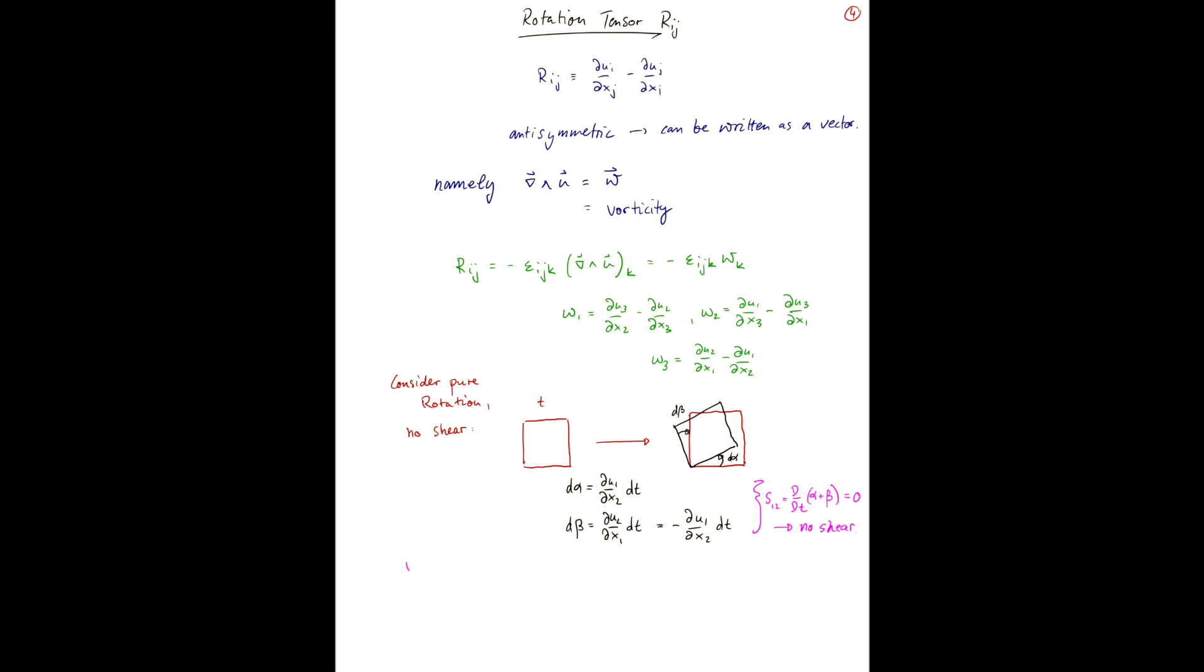However, our average rate of rotation is given by a half d/dt alpha minus beta. And it's a minus here because we've defined d-beta to point in the clockwise direction. And so, if you plug in your expressions for d-alpha and d-beta into here and take the limit as dt goes to 0...